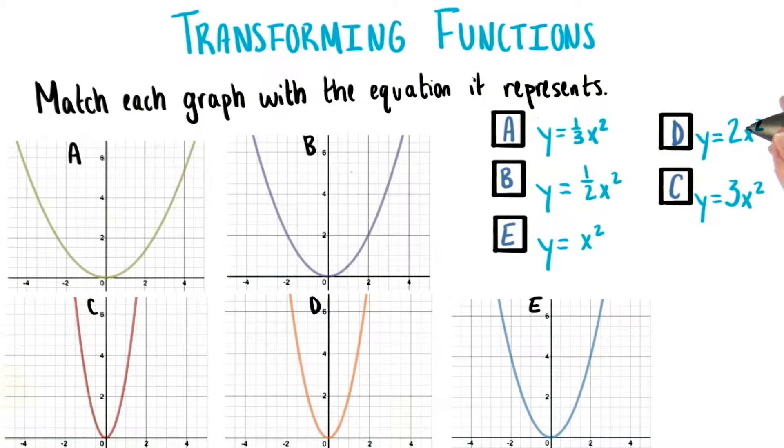And putting a bigger number, like 2 or 3, a number greater than 1 as the coefficient, made the graph skinnier, like we see in C and D.